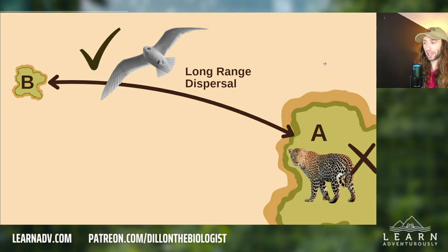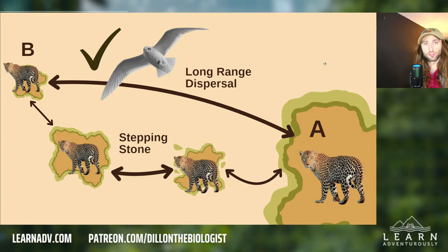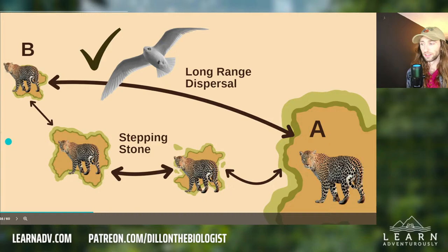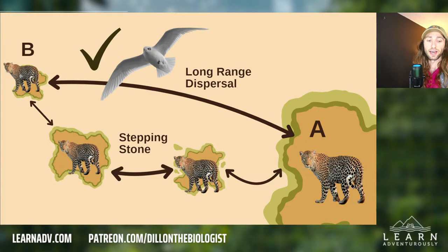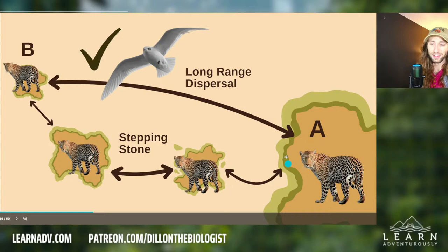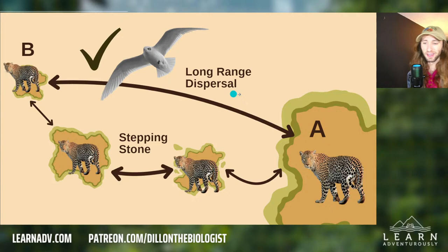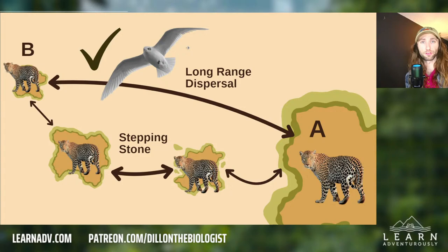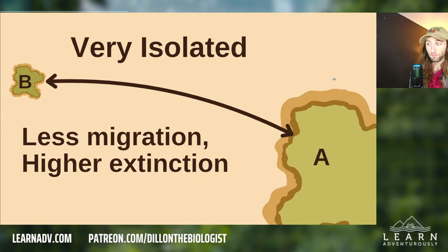Anything in island biogeography is dependent on the organism. How could a jaguar get from the mainland to an island? Via the stepping stone model — the jaguar essentially steps from island to island until it reaches its destination. If we saw jaguars on both point A and point B, we would assume a stepping stone model because long-range dispersal would be extraordinarily difficult for a jaguar, whereas a bird could be either model.